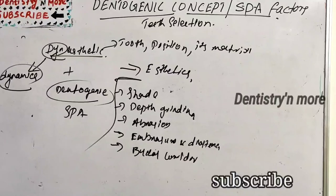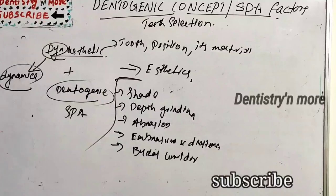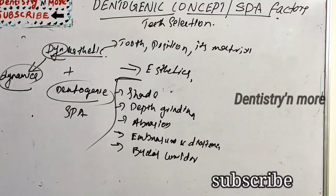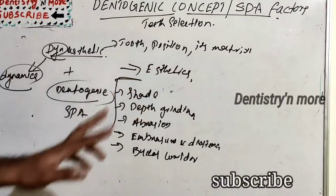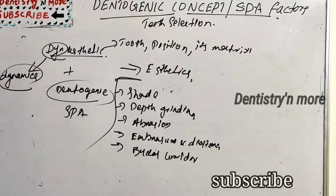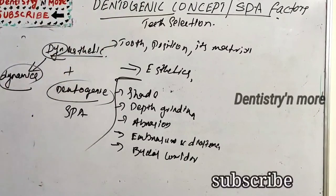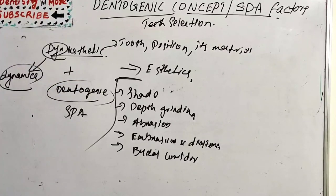This is basically what all prosthodontists follow to set the teeth, especially the anterior teeth, as it mainly emphasizes aesthetics. Hope you understood the concept of dentogenic SPA factors and dynesthetics. This might be asked as a short note. I'll come back with a new topic in prosthodontics — thank you.